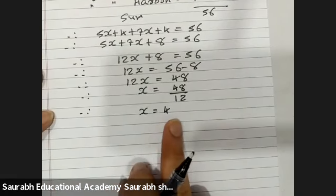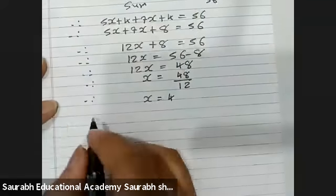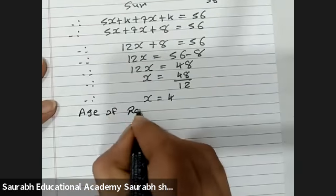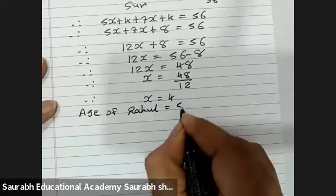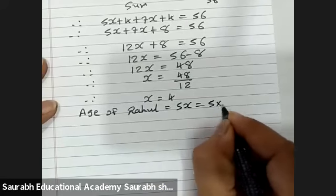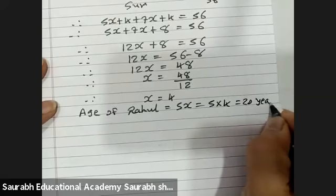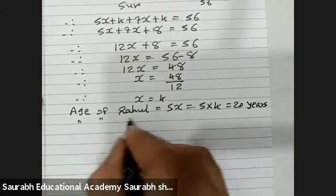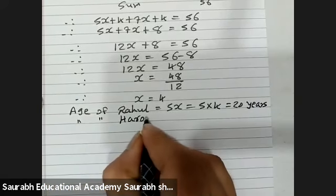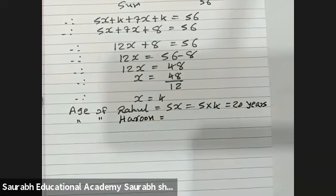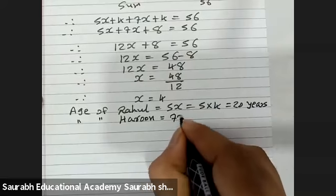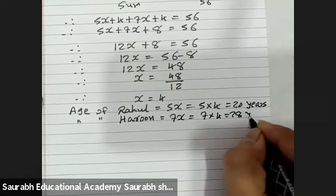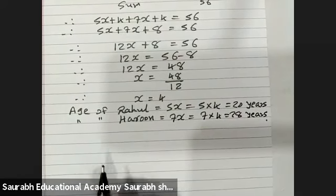This is not the final answer; we have to multiply with the ratio. The age of Rahul is 5x, so 5 into 4 equals 20 years. The age of Haroon is 7x, so 7 into 4 equals 28 years. These are the answers.